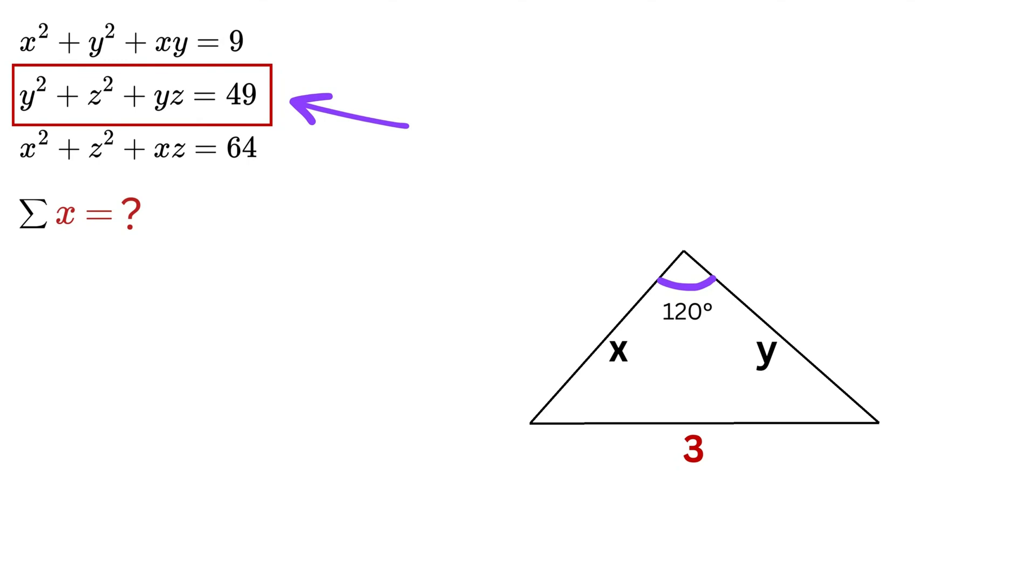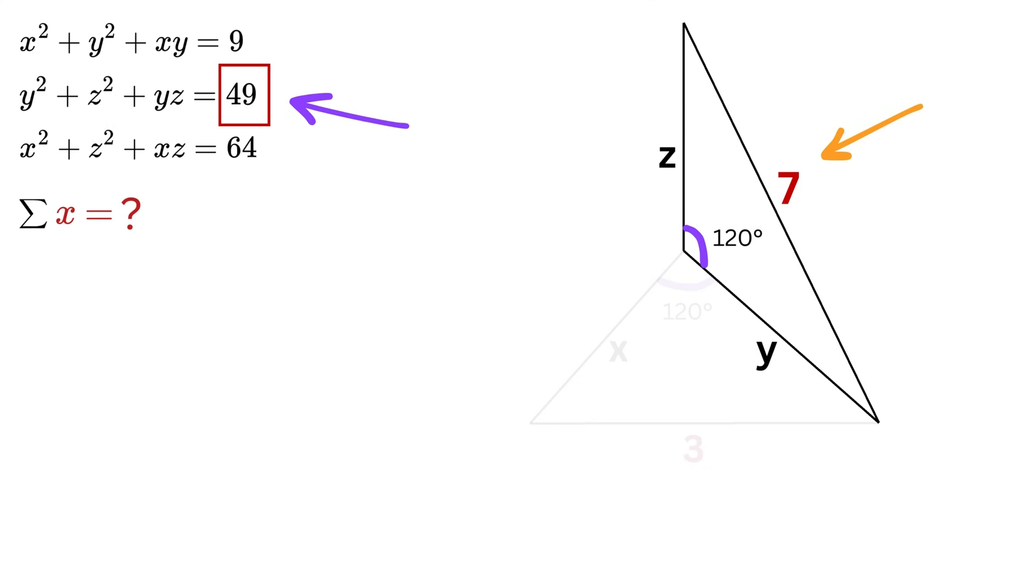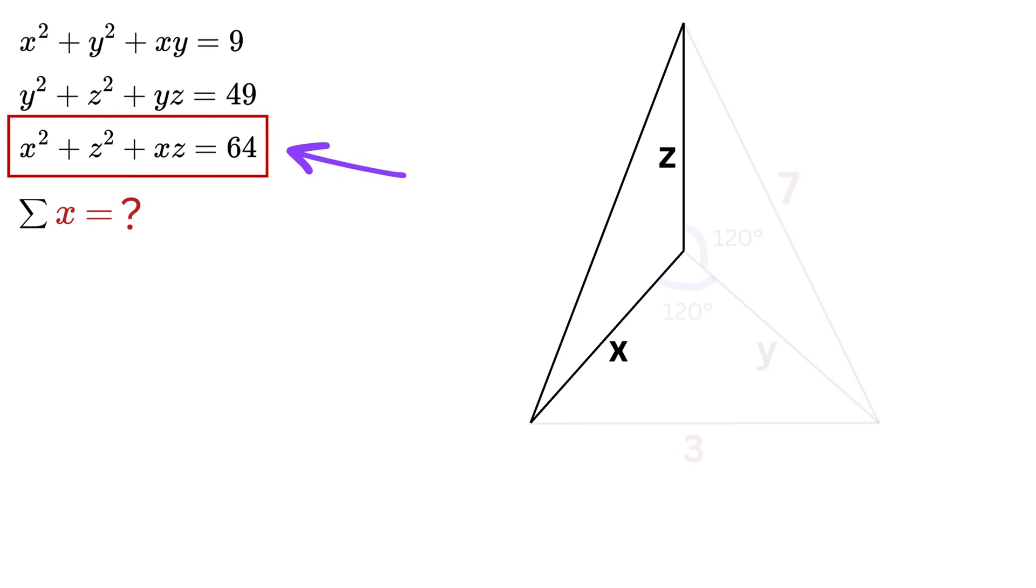Similarly, we can represent this equation using this triangle where this angle is 120°, this side is y, this is z, and this will be √49 which is 7. And this equation using this triangle where this angle is 120°, this side is x, this is z, and this will be √64 which is 8.